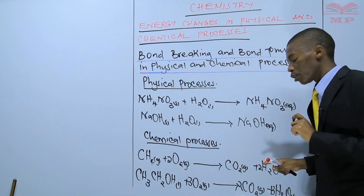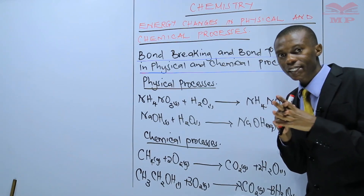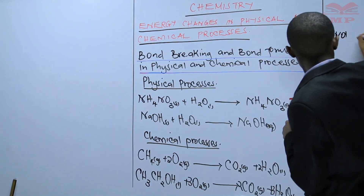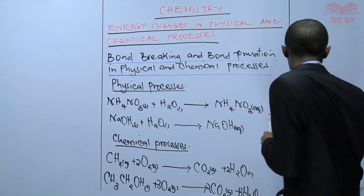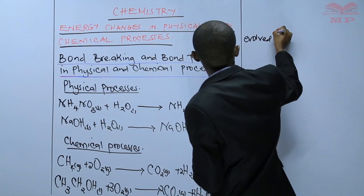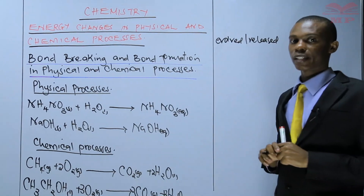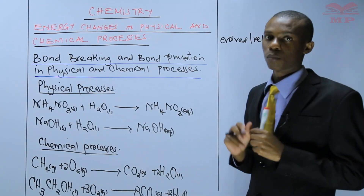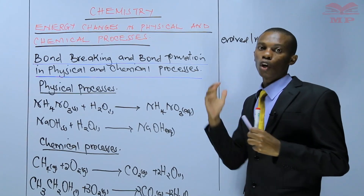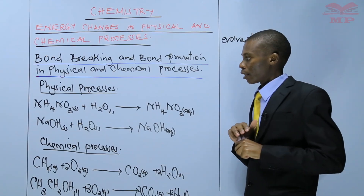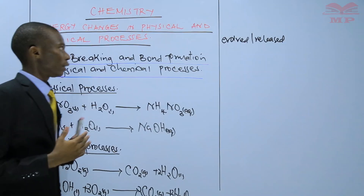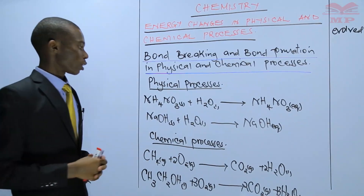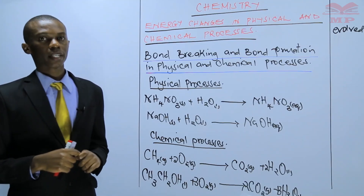When it comes to bond formation, as you form bonds, energy is evolved and released to the surroundings. So bond formation is an exothermic reaction, because it leads to loss of heat to the surroundings. Bond breaking is an endothermic reaction, and bond formation is an exothermic reaction.